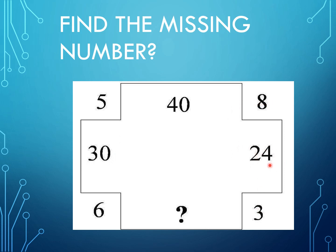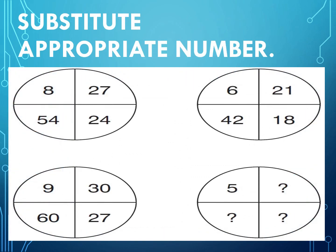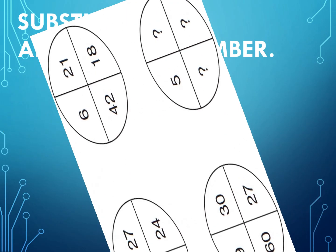Next question: substitute appropriate number. Like the same, you can first check which are the given details, then go for the blue, then is there any relation with each number? So find that. Now we will go for the answer.